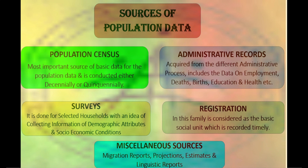The second source is administrative records, acquired from different administrative processes, which help in acquiring data on employment, deaths, births, education and health. Third is through surveys, done for selected households with the idea of collecting information on demographic attributes and socio-economic conditions. Fourth is through registration, where family is considered as the basic social unit which is recorded timely. Last but not least are miscellaneous sources, gathered through migration reports, projections, estimates and linguistic reports.